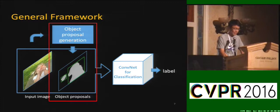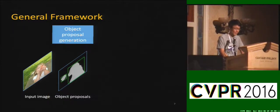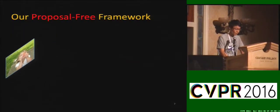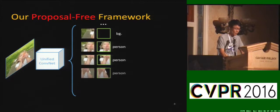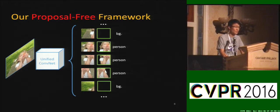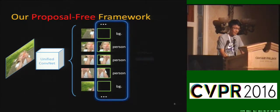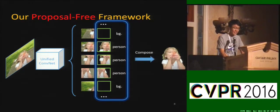In our work, we show another direction to tackle this problem without object proposals. Our solution is to model objects by a set of predefined patches. Each patch corresponds to part of an object, which is easy to achieve. For each patch, we predict class label and mask in a unified network. In the final step, masks of those patches are aggregated together to infer the entire object, and no proposal generation is required.